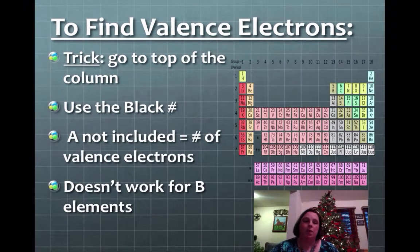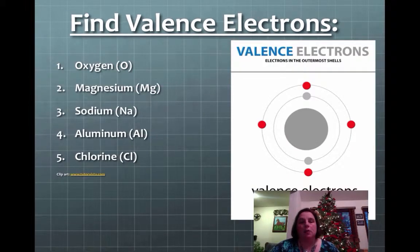It doesn't work for the B's. The B's have a little more complicated process to figure that out. So to find the valence electrons, I want you to practice with 5 elements that I have here. Remember the trick is to use the number next to the A. So I've got oxygen, magnesium, sodium, aluminum, and chlorine. So go ahead and put me on pause. Try to go find them.